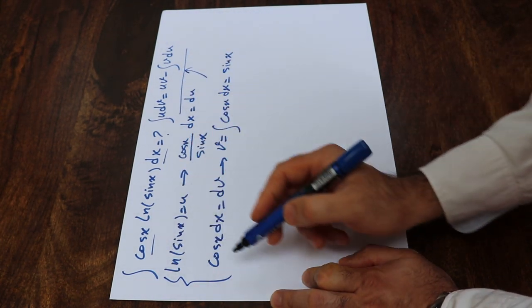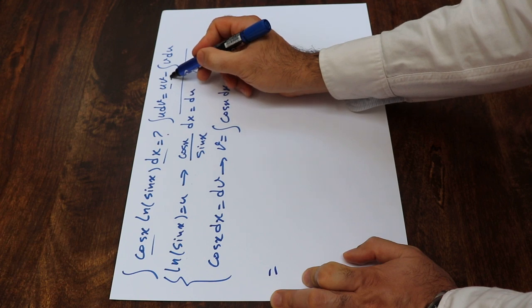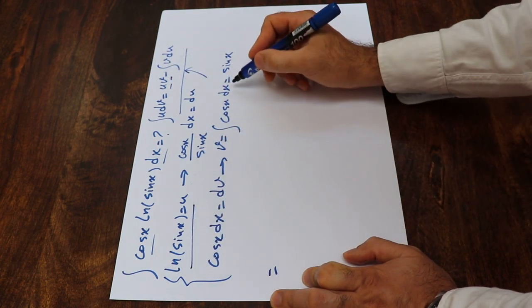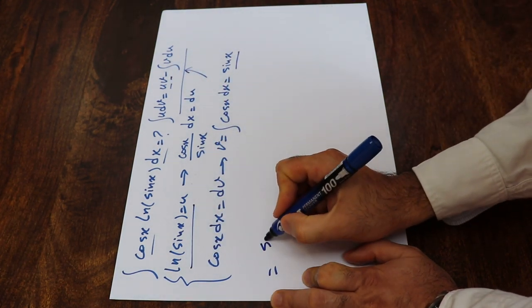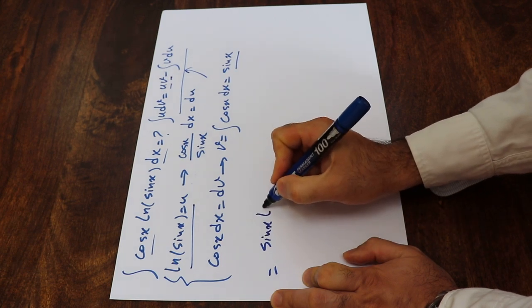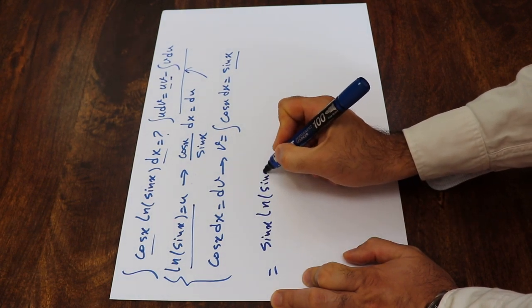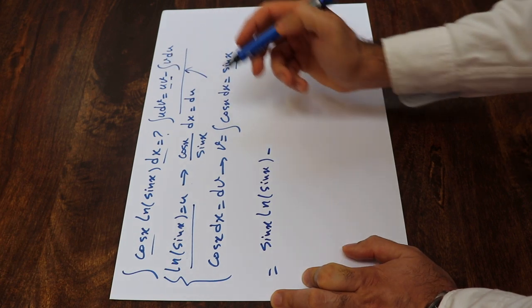Therefore, this integral will be equal to u times v. u is this one and v is this one. Therefore, that will be sine x times ln sine x minus integral of v du.